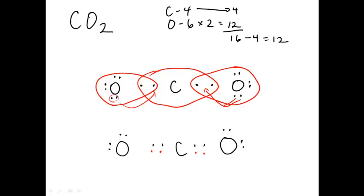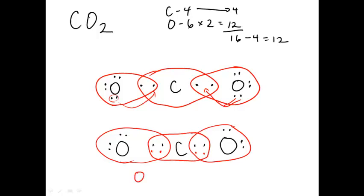We'll take this pair of electrons here and shift it here so that we have another pair of electrons here. What this does now is still keeps the oxygen content in that it believes it has 8 electrons, as does this one. And now the carbon also believes it has 8 electrons.